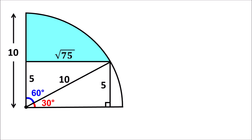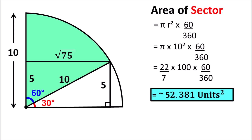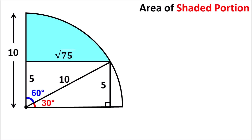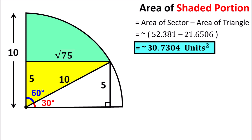Now, knowing the area of the yellow highlighted triangle and the green highlighted sector, we can calculate the area of the shaded portion. The area of the shaded portion equals the area of the sector minus the area of the triangle, which is 52.381 minus 21.6506. The area of the shaded portion is approximately equal to 30.7304 square units, which is the final answer.